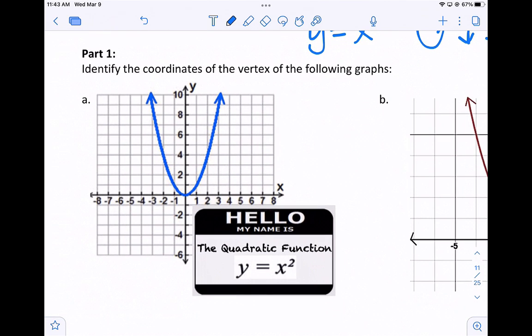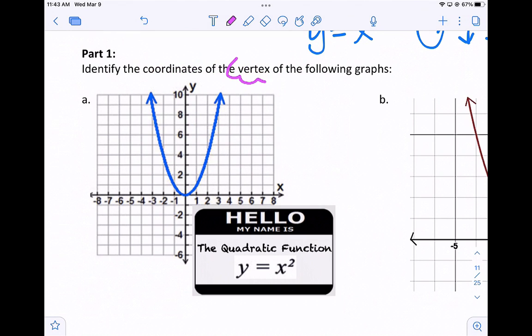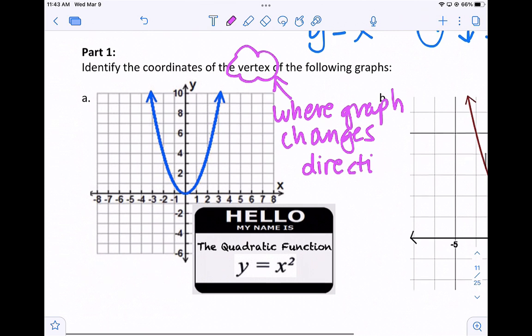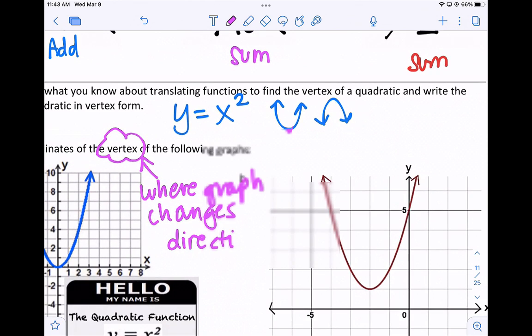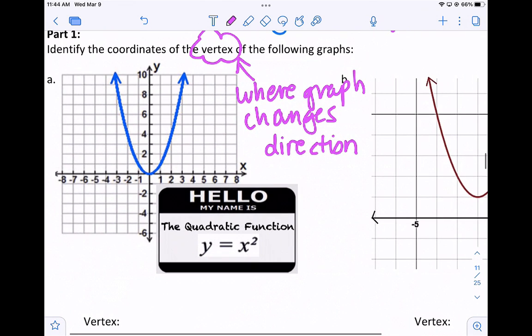Part 1: Can you identify the coordinates of the vertex? The vertex is where your graph changes direction. And where it changes direction in a quadratic is either going to be the maximum point, if it's upside down, or the minimum point, if it's like a smiley face.